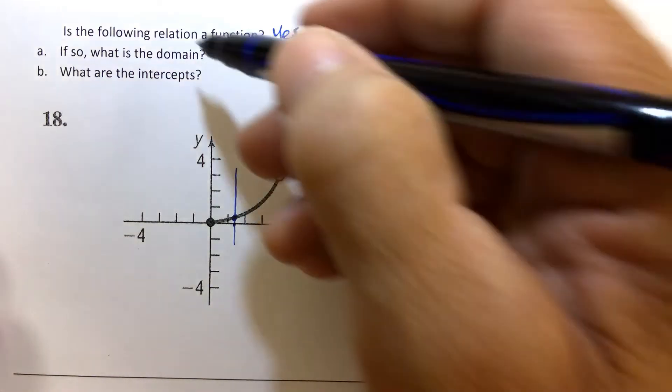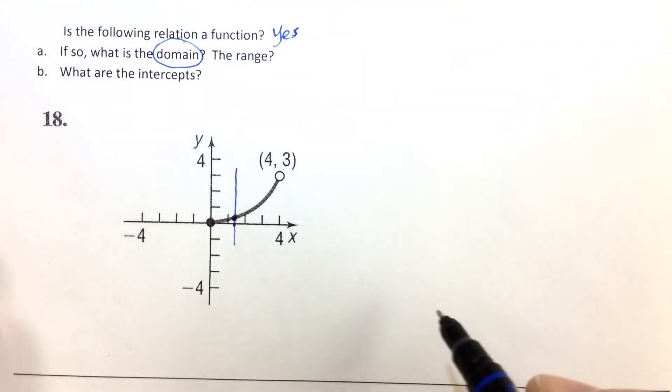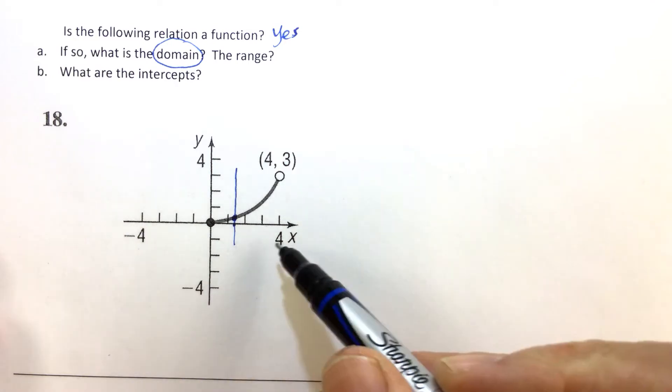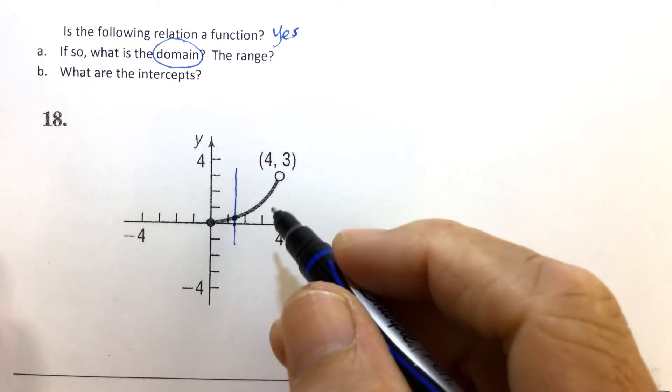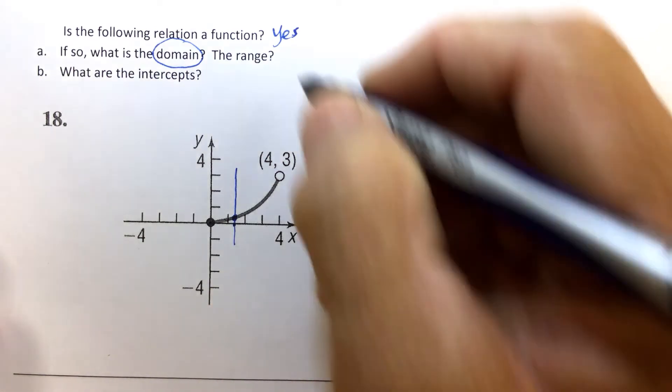So that brings us to the domain. When you put a member of the domain in, you get one member of the range out. Thinking about the domain, what's the lowest x-value that we can plug in? That would be zero.